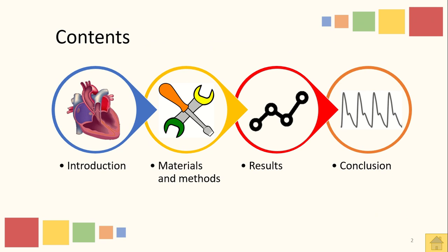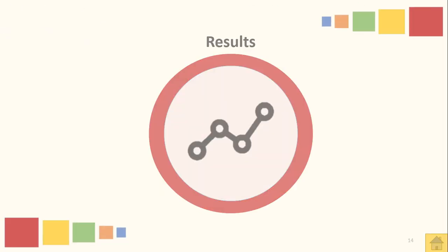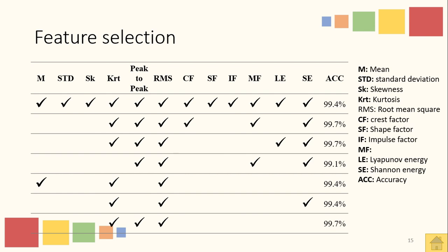The results show that among a number of feature sets, the best feature set giving the best accuracy comprises kurtosis, peak-to-peak, and RMS, achieving an accuracy of 99.7%. Other features also gave 99.7% accuracy, but in order to have a system with maximum computational efficiency, it is mandatory to use the least number of features. Therefore, we chose the feature set comprising only three features.